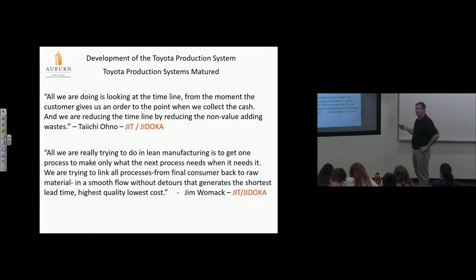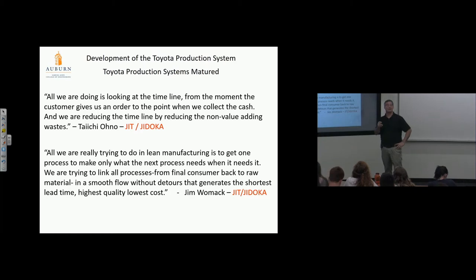Okay, a couple of quotes here, and they're very similar. Womack is the author of The Machine That Changed the World. Taiichi Ono: all we are doing is looking at the timeline from the moment the customer gives us an order to the point that we collect cash. He's very direct. And we're reducing that timeline by reducing non-value-added waste. Non-value-added waste, primarily in this case, is massive inventories, which take forever for a car to flow through the entire process. So he's saying, completely eliminate inventory, then a time from order to delivery is a cycle time of the system added up, theoretically. So that's what he's trying to do. No defects, no inventory, ideally. And then Womack, I think he wanted to be pretty smart about this too, so he said something very similar. All we are really trying to do in lean manufacturing, this is good, this is important, because he's summarizing everything here. All we are really trying to do is get one process to make only what the next process needs when it needs it. No batching, right? We are trying to link all processes from final consumer back to raw material in a smooth flow without detours that generate the shortest lead time, highest quality, lowest cost. And we'll get into that.